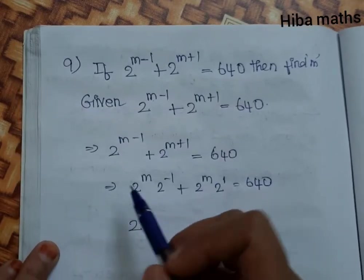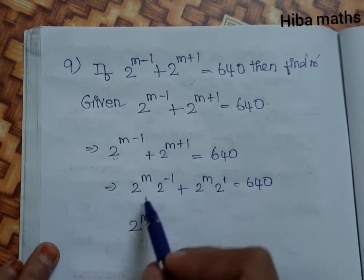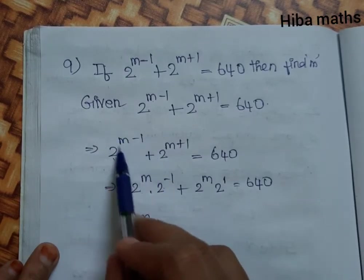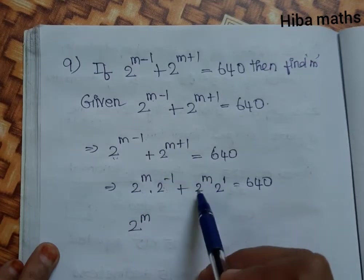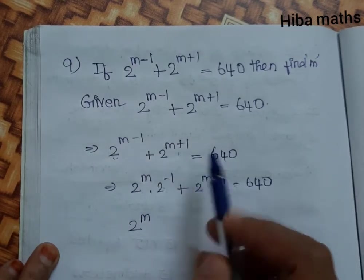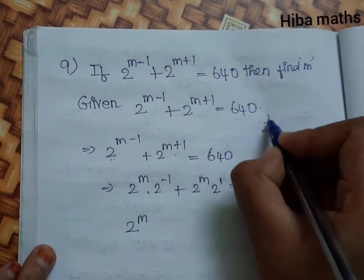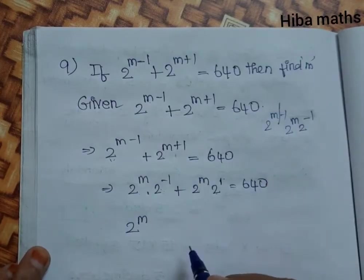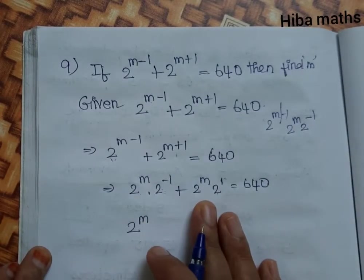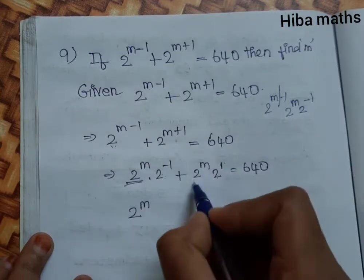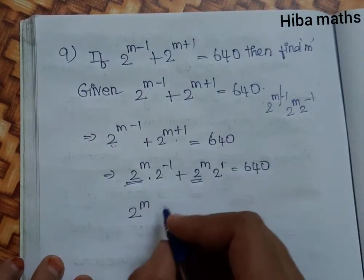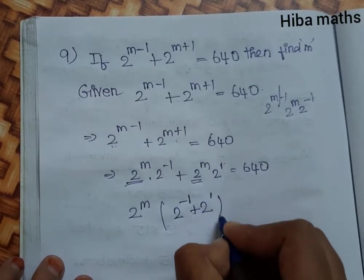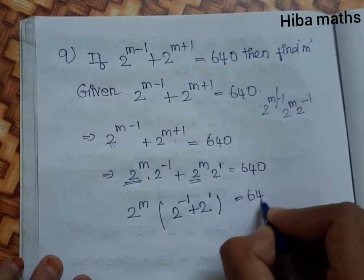How do we split it? We can factor out 2^m from both terms. 2^(m-1) becomes 2^m × 2^(-1), and 2^(m+1) becomes 2^m × 2^1. So the equation becomes 2^m(2^(-1) + 2^1) = 640.